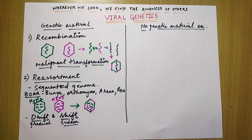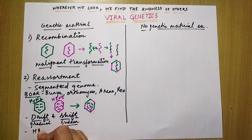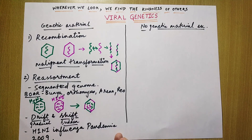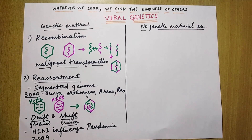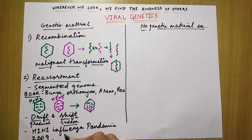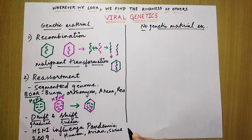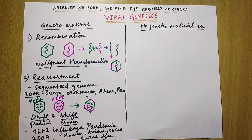So that was all about reassortment. The classic example is the H1N1 influenza pandemic that occurred in 2009. What was very specific about this pandemic was that all the influenza pandemics that occurred before this had a mixture of human virus and avian virus — that is, virus from birds. But this was the first pandemic in which there was involvement of virus from swine, and that's why this influenza was named swine flu.